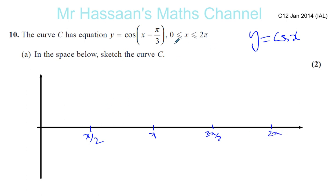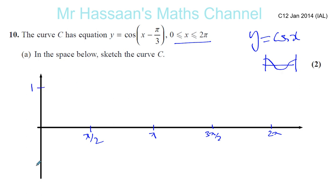In radians — so 90, 180, 270, 360 — try to make them equally spaced, but it's just a sketch. The cosine curve between 0 and 360 has this kind of shape: it starts from 1, the lowest it gets is minus 1 at pi, it's 0 at pi over 2 and 3 pi over 2, and back to 1 at 360.